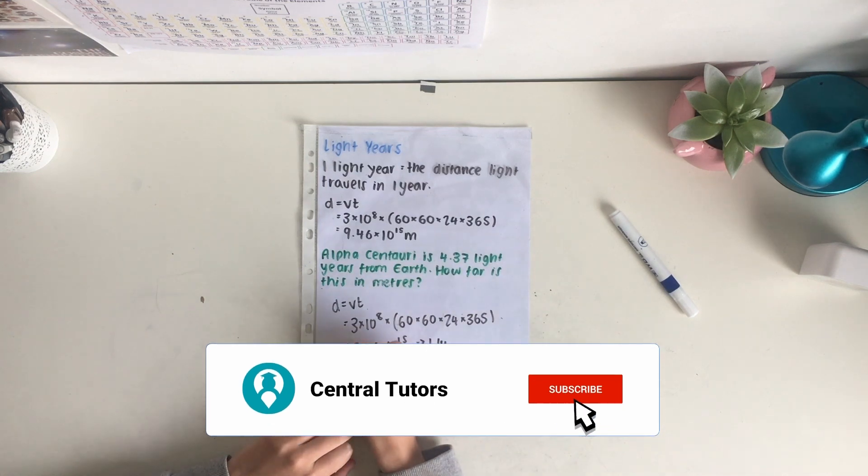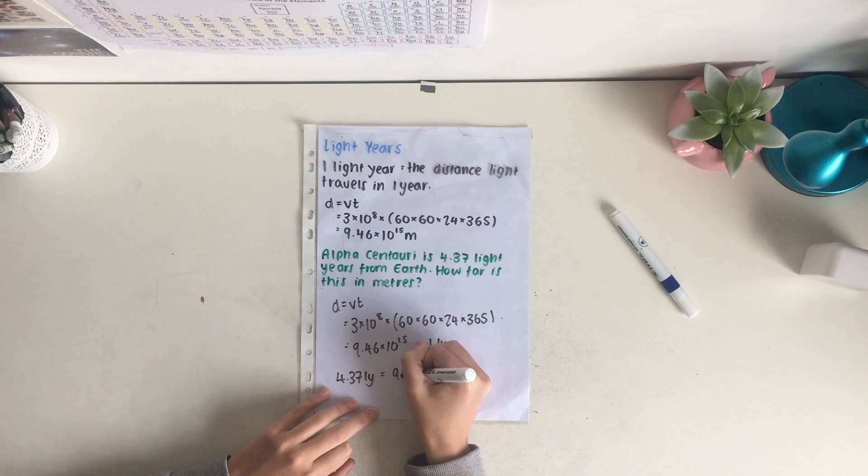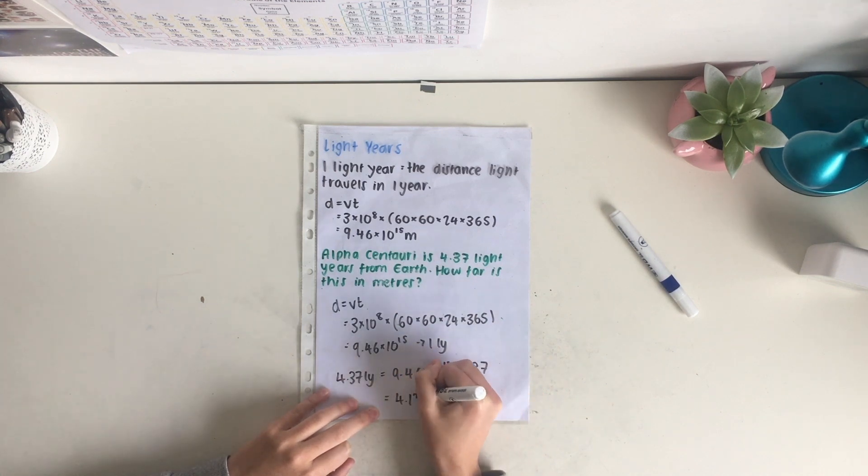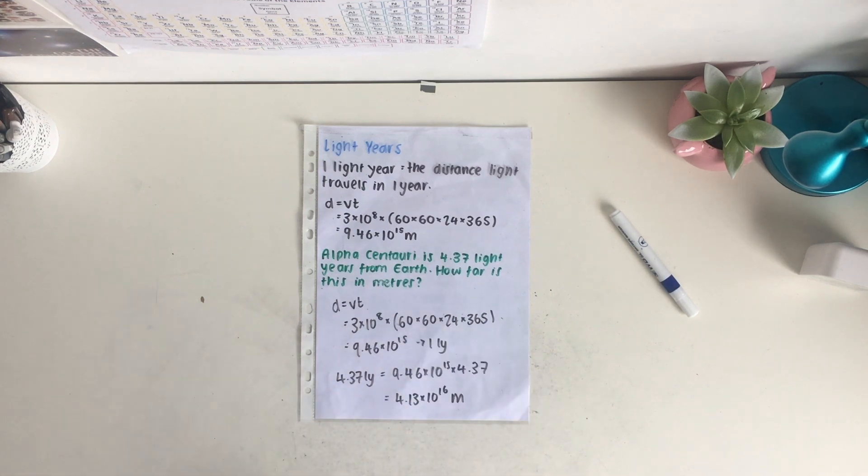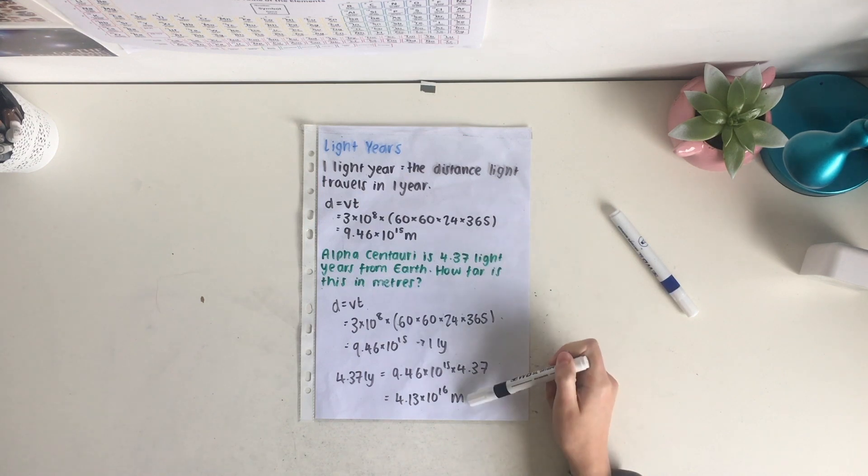To work out 4.37 light years, we need to do 9.46 times 10 to the 15 times 4.37. This gives us a value of 4.13 times 10 to the power of 16 meters. As you can see, 4.37 light years is a much shorter way of saying this huge value.